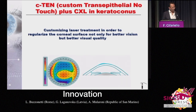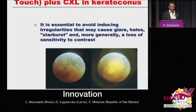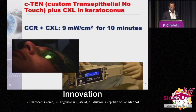The technique combined with cross-linking is a customized laser treatment that aims at regularizing the corneal surface in order to achieve both goals at the same time. It is absolutely essential to avoid inducing irregularities that may cause glare and other problems.